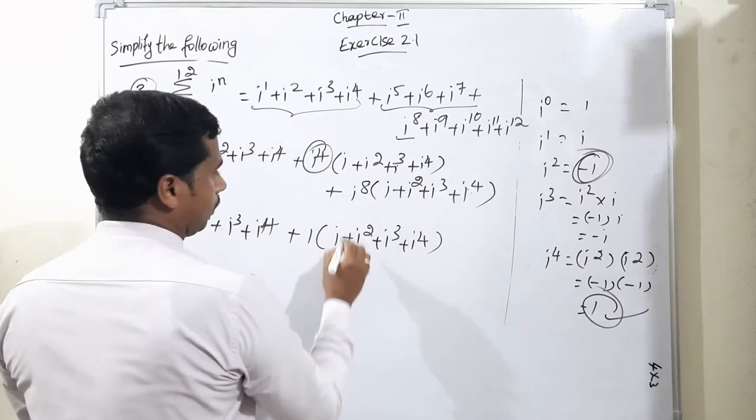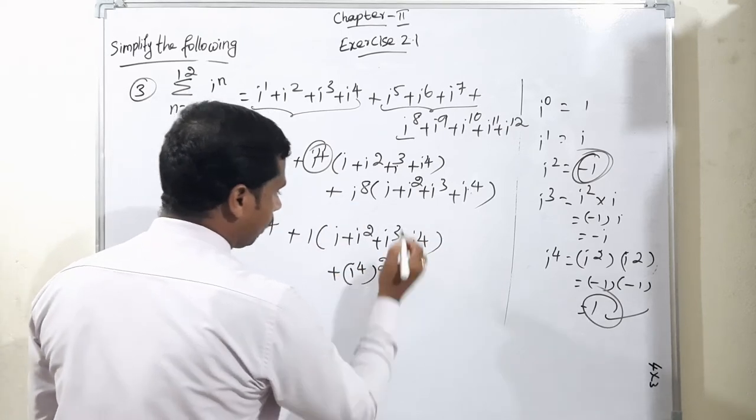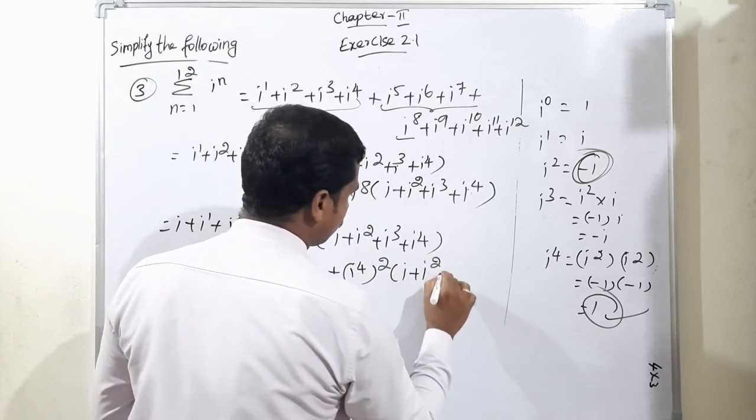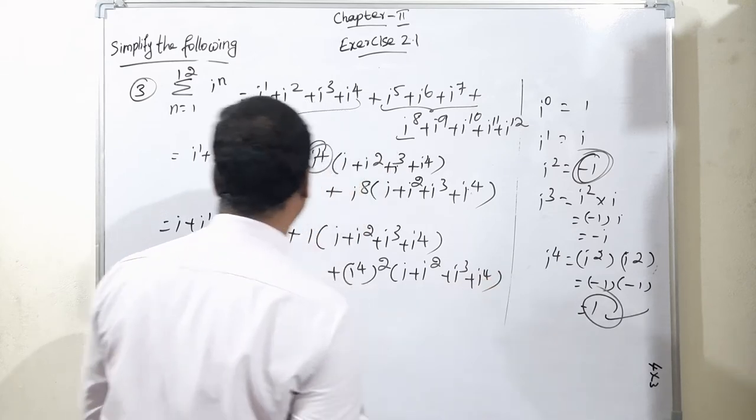So i plus i to the power 2 plus i to the power 3 plus i to the power 4, factored as i to the power 8 times the whole square, remaining the same terms.